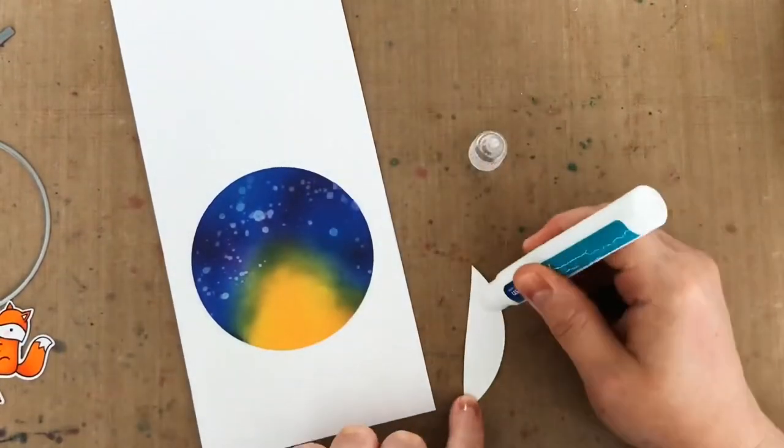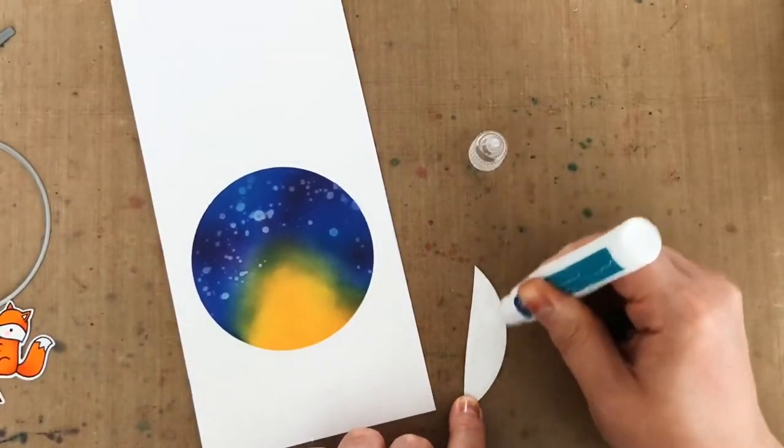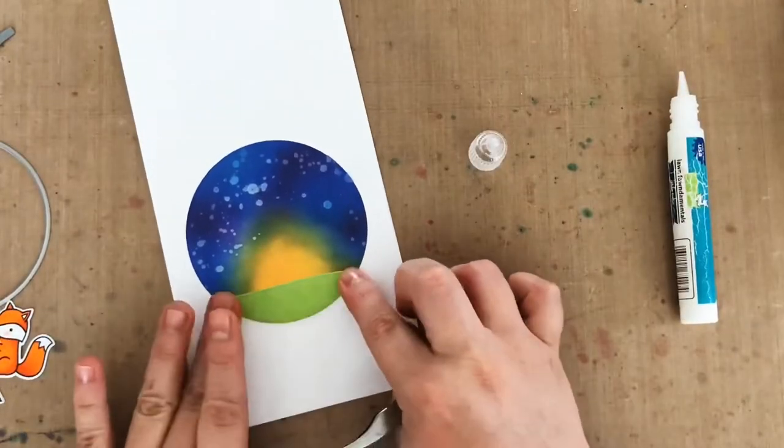Then I'm going to use a little bit of liquid adhesive to adhere the little grass to my ink blended background. And then before I start adding my critters, I'm going to add my sentiment.